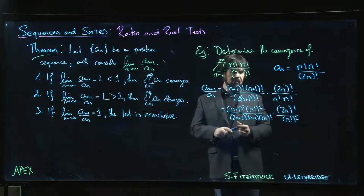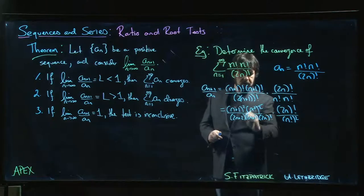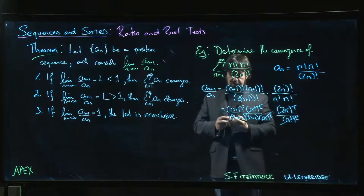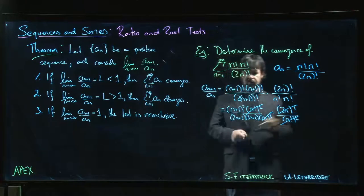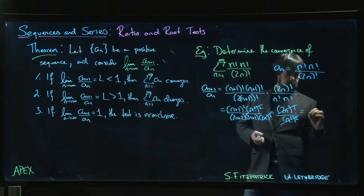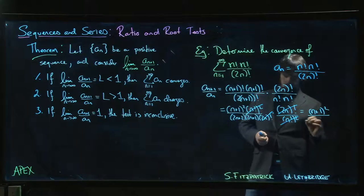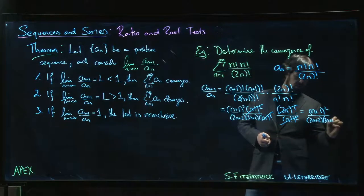And now we look for cancellations. And there are a lot of them. Those cancel. That cancels. And we're just left with n plus 1 squared over 2n plus 2 times 2n plus 1.